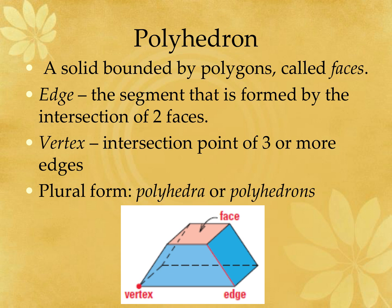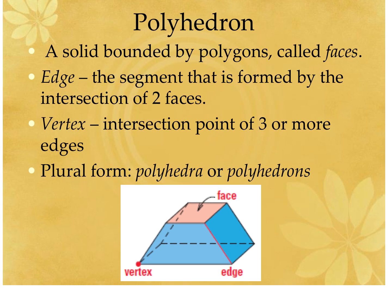The plural form of polyhedron is polyhedra or polyhedrons. When we go to name these solids, we're going to use the name of the base. They're not always going to be sitting on their bases. In this particular picture, this is a prism — more specifically, there are two trapezoids here and it's not sitting on its base, but this is an example of a trapezoidal prism.